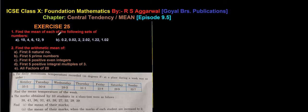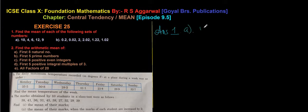Let us start with Exercise 25, Sum number 1. For question 1A, the observations given are: 10, 4, 6, 12, and 9.